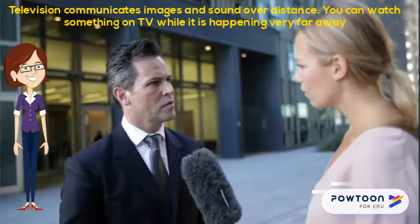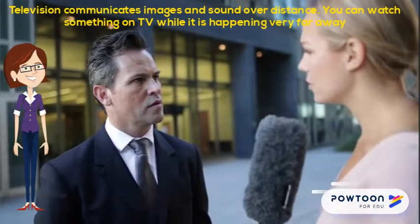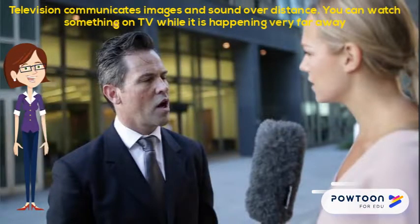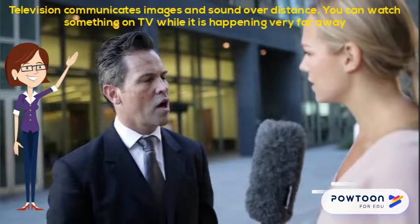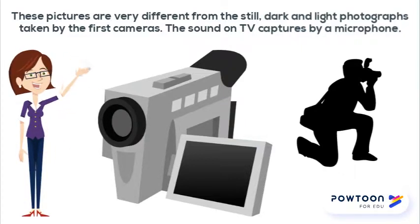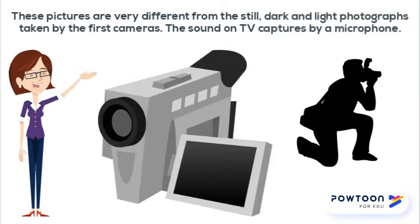Television communicates images and sound over distance. You can watch something on TV while it is happening far away. The images we see are taken by a TV camera. It takes moving pictures in full color. These pictures are very different from the still, dark and light photographs taken by the first cameras. The sound on TV is captured by a microphone.